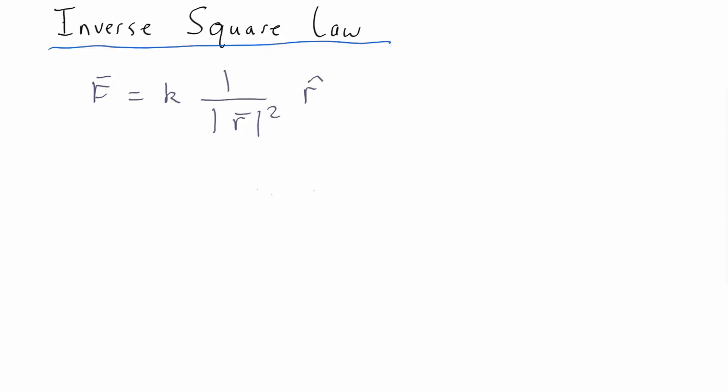So what does that mean? We're always trying to work out the field caused by something which might be a charge or a mass or radiation source at some point nearby, and the r vector is the distance from whatever is causing the field to the point at which you're measuring it.